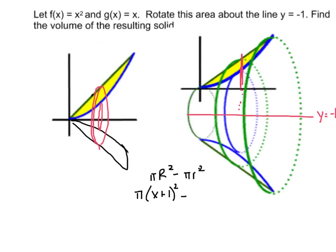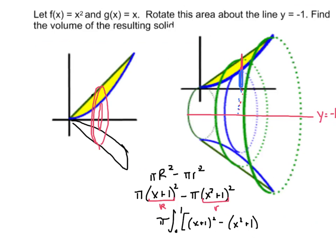The inner or smaller radius would have been x², and that also becomes one unit bigger, so it becomes x² + 1. This is your big R and this is your little r. Sometimes people make the mistake of leaving the +1 out — but remember that's part of your radius; you've made the radius one unit bigger and need to reflect that. We would integrate from 0 to 1: π times [(x+1)² - (x²+1)²] dx.